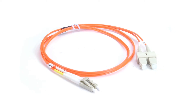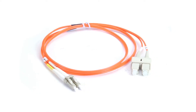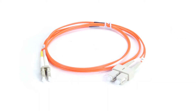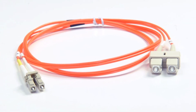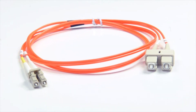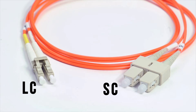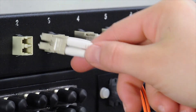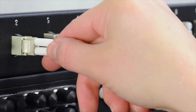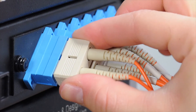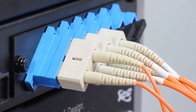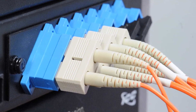This is an LC to SC multi-mode duplex fiber cable. It features two LC connectors on one end and two SC connectors on the other. An LC connector has a small form factor design with a molded plug casing that has a push and pull locking system. An SC connector is a larger version of an LC connector.